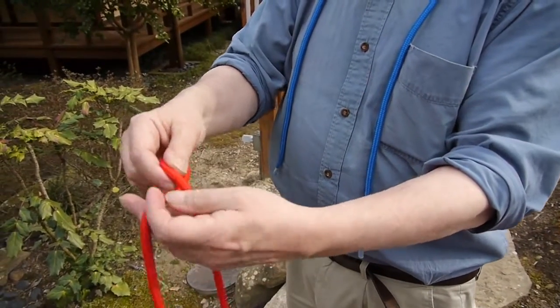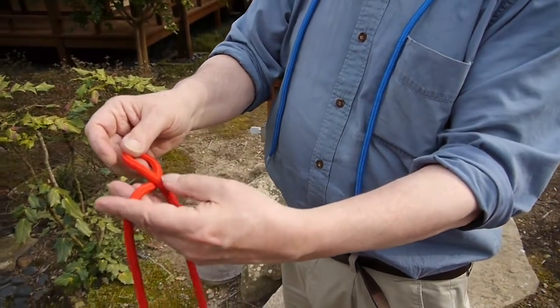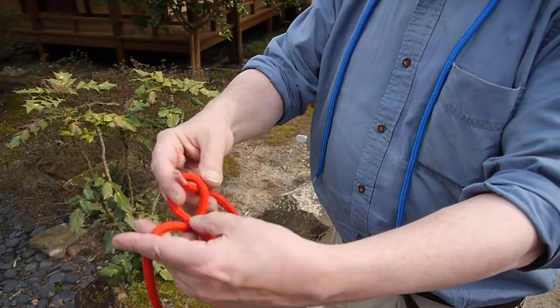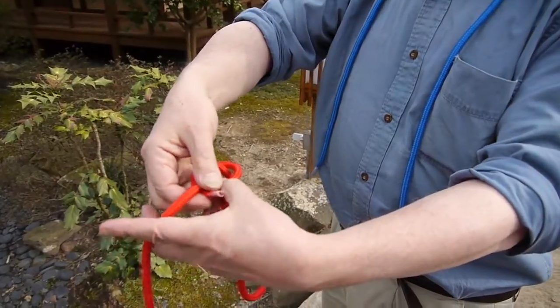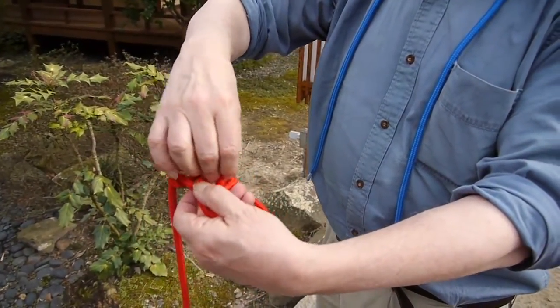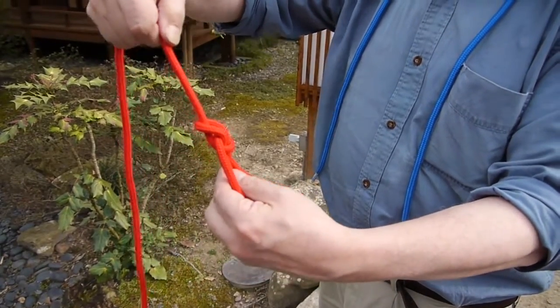For example, I'll make a bowline knot. You make a bowline by making a loop and passing the rope through the loop. Now I have a trefoil knot. But then you do a little more complicated thing. You bring the line around and back down through the loop like that and tighten it here.